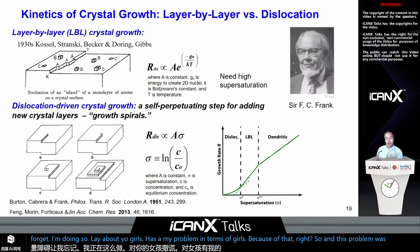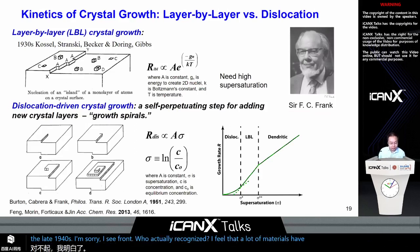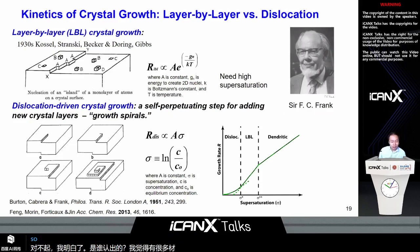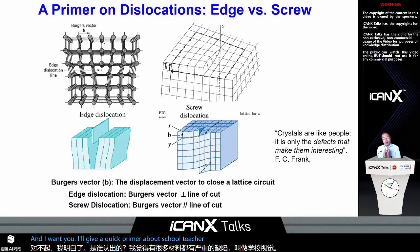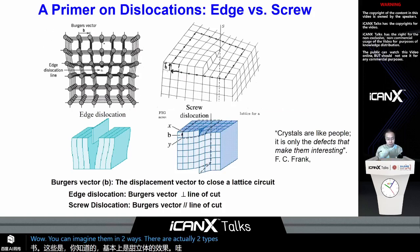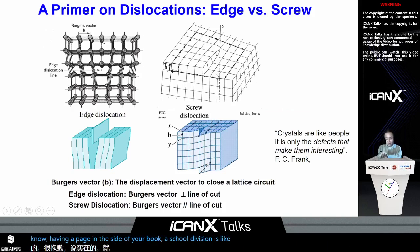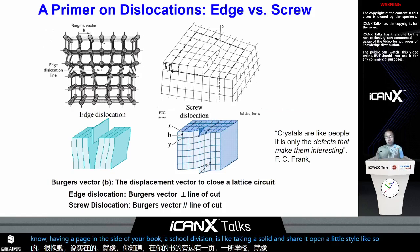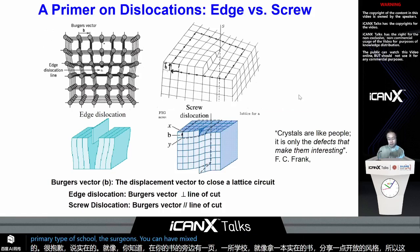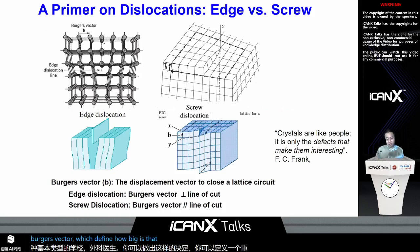It turns out this layer-by-layer process actually needs high supersaturation, because supersaturation is defined as the concentration that is above the equilibrium solubility of a solid. The reason is that it takes some energy to nucleate that initial step — you need additional concentration to overcome that energy barrier. This problem was solved in the late 1940s by Sir F.C. Frank, who recognized that many materials have crystalline defects called screw dislocations. There are two types of dislocations: edge dislocations — like an extra page inserted into the side of your book — and screw dislocations, which are like taking a solid and shearing it open to create a little step. You can define an important parameter called Burgers vector, which defines how big that screw dislocation is.